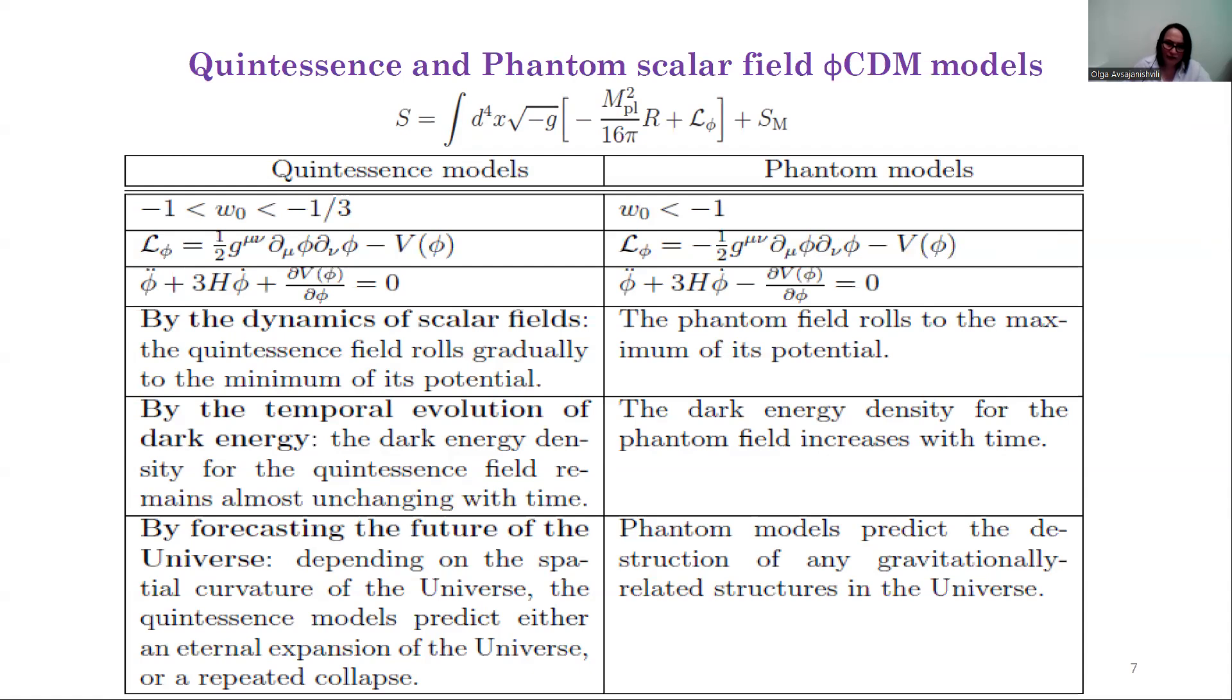By the temporal evolution of dark energy: for quintessence fields, the dark energy density remains almost unchanging with time, while it increases for phantom fields. By forecasting the future of the universe: dependent on the spatial curvature of the universe, the quintessence models predict either an eternal expansion of the universe or a repeated collapse. On the other hand, the phantom models predict the destruction of any gravitationally related structures in the universe.